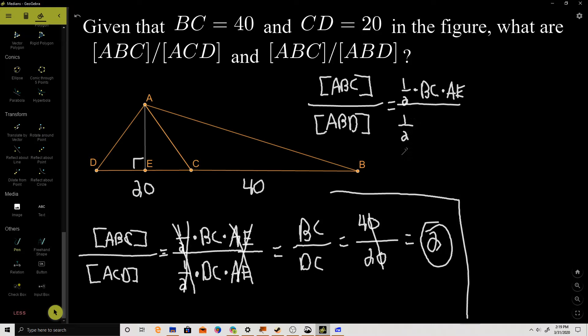That's one-half times, what is the base of ABD? That's the entire bottom part, DB. So that's DB times, what is the height? The height of ABD is the top part A to the bottom E. Notice we have the same height again, AE.